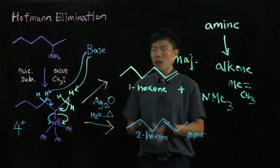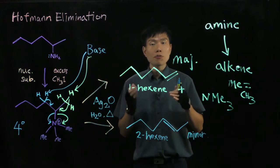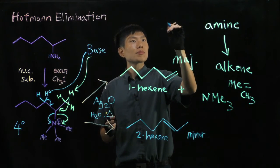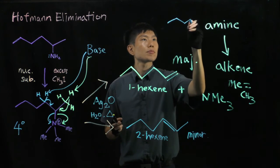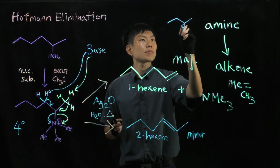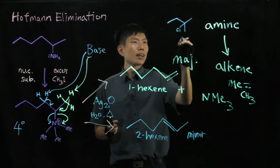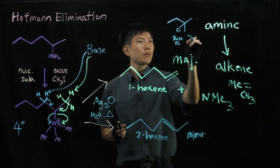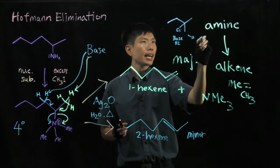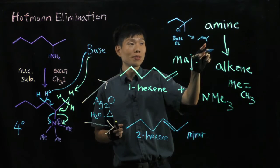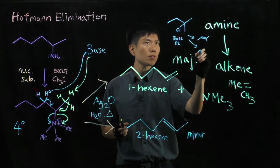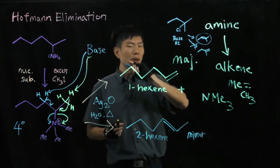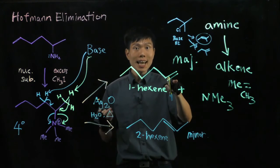So what's really happening? We have learned that if we have a choice, we prefer to form the more substituted alkene because it's more stable due to hyperconjugation. In the E2 reaction with an alkyl halide and a base, it prefers to form the pi bond to get a more substituted, more stable alkene. But by observation for the Hoffman reaction, we realize that it prefers to form the less substituted alkene.